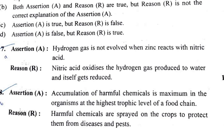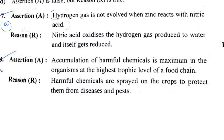Question 17 (Assertion-Reason): Assertion — hydrogen gas is not evolved when zinc reacts with nitric acid because it is a good oxidizing agent. Reason — nitric acid oxidizes the hydrogen gas produced to water and itself gets reduced. Both assertion and reason are correct and the reason explains the assertion, so the answer is option A.